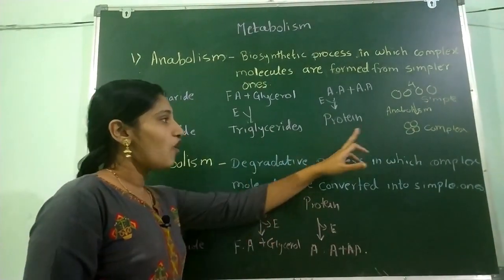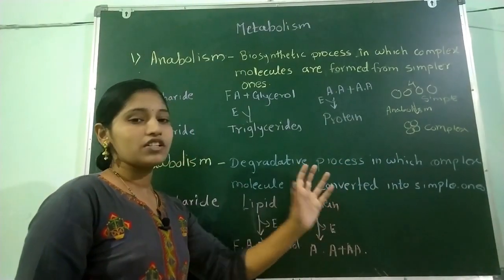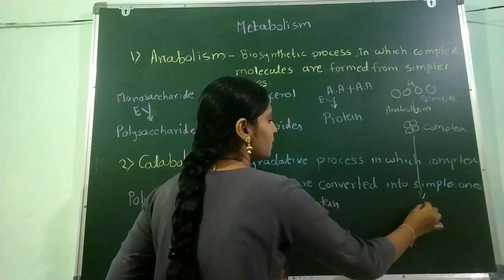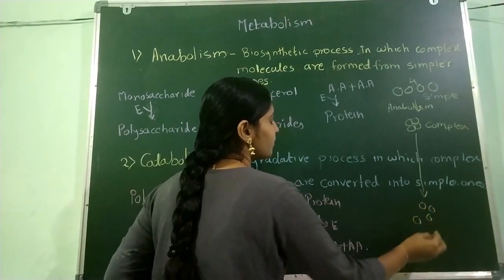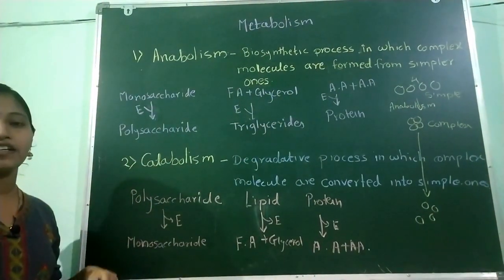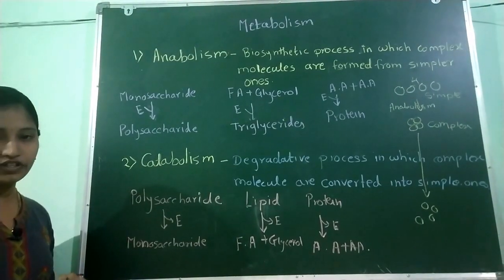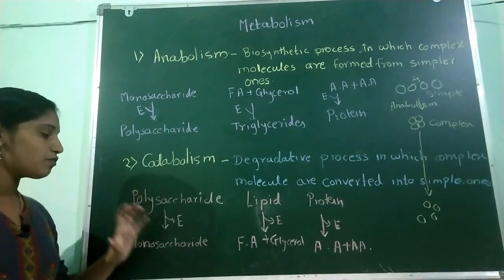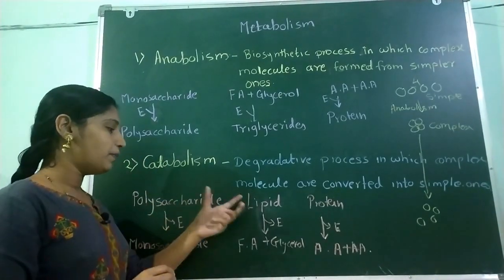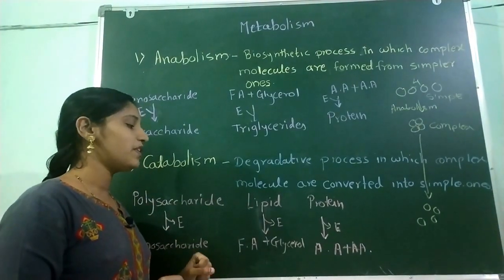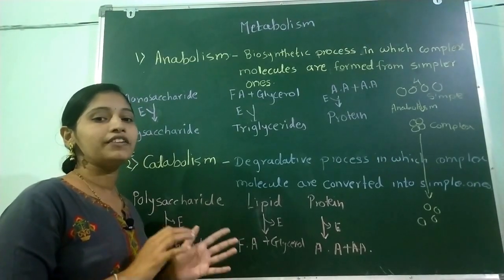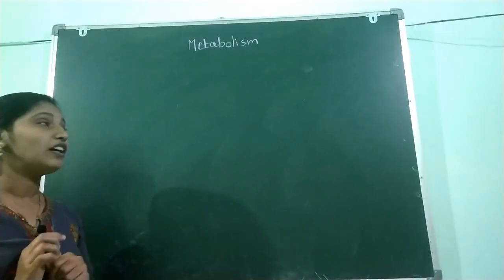What is catabolism? A complex molecule is converted into simple molecules — that is, complex molecules are degraded into simpler ones. For example, polysaccharide is converted into monosaccharide units, and in this process energy is released. Lipid is converted into fatty acid plus glycerol, and protein is degraded into amino acid units.